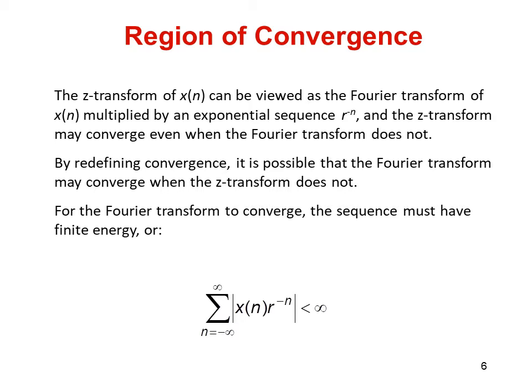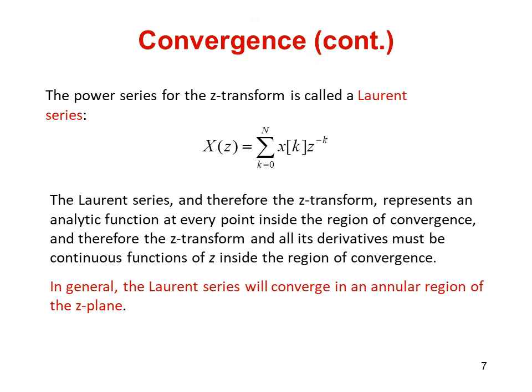Now we define what is region of convergence. The region of convergence, known as ROC, is important to understand because it defines the region where the Z-transform exists. The Z-transform of X[n] can be viewed as a Fourier transform of X[n] multiplied by an exponential sequence R^n, and the Z-transform may converge even when the Fourier transform does not. For the Fourier transform to converge, the summation over minus infinity to plus infinity of |X[n]| times R^(minus n) must be less than infinity. The ROC of a given X[n] is defined as the range of Z for which the Z-transform converges. Since the Z-transform is a power series, it converges when X[n] times z^(minus n) is absolutely summable.